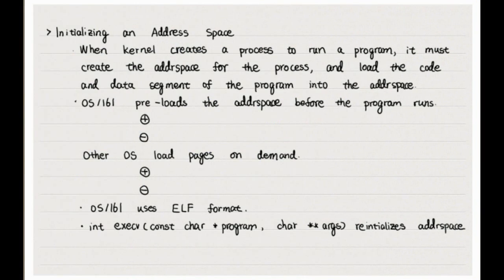When kernel creates a process to run a program, it must first create the address space for that process and load the code and data segment of that program into the address space. There are two ways to load the code and data.